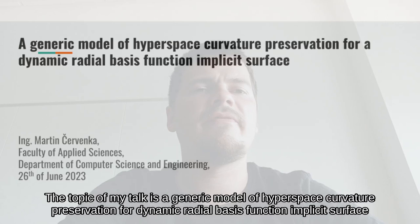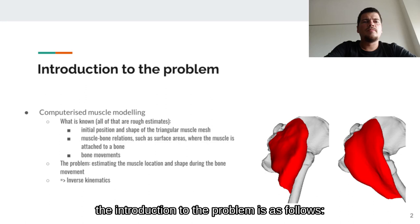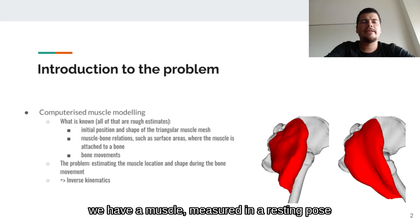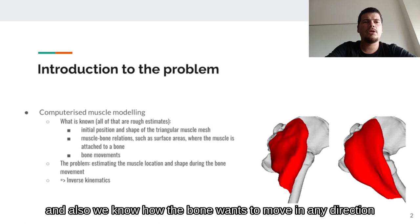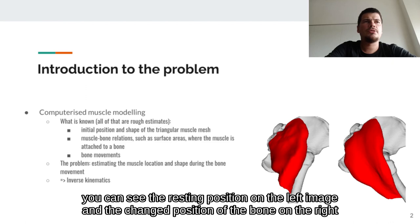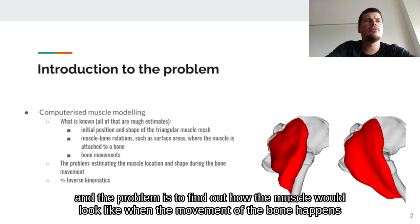The introduction to the problem is as follows. We have a muscle measured in a resting pose and also a set of bones. We know its initial shape and the relation between the muscle and the bones, and we also know how the bone wants to move in any direction. You can see the resting position on the left image and the changed position of the bone on the right. The problem is to find out how the muscle would look like when the movement of the bone happens.